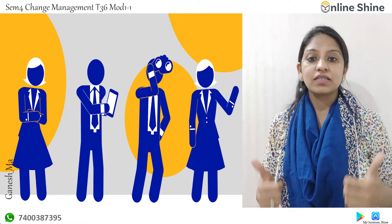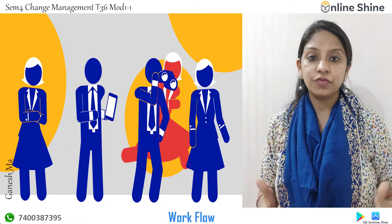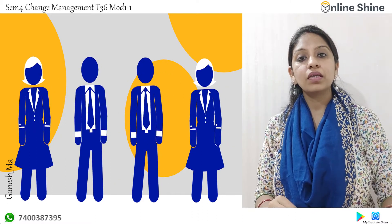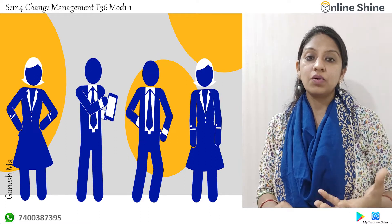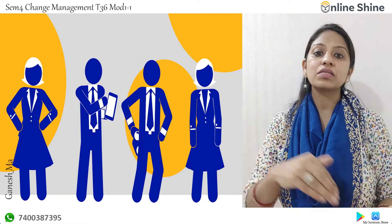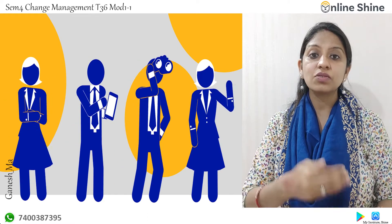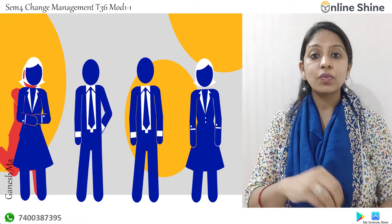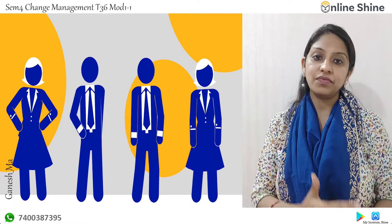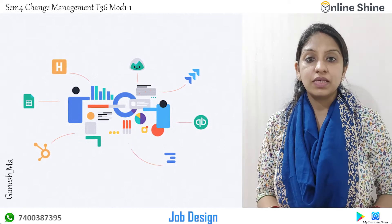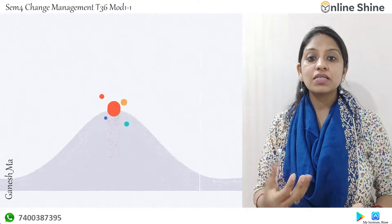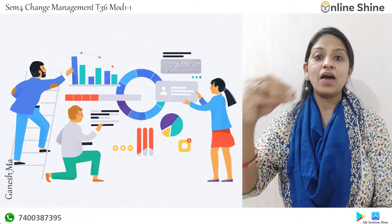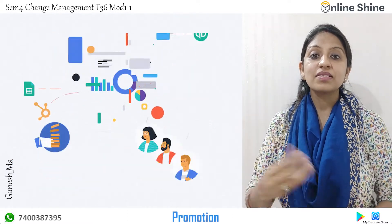Group level change means change in the workflow where you are working. For example, you are working on a project and your client says he wants something different implemented in the organization. That is a change in the workflow you were already working on. Second is change in job design — for example, where you are a manager and you get a promotion. That is also a group level change.